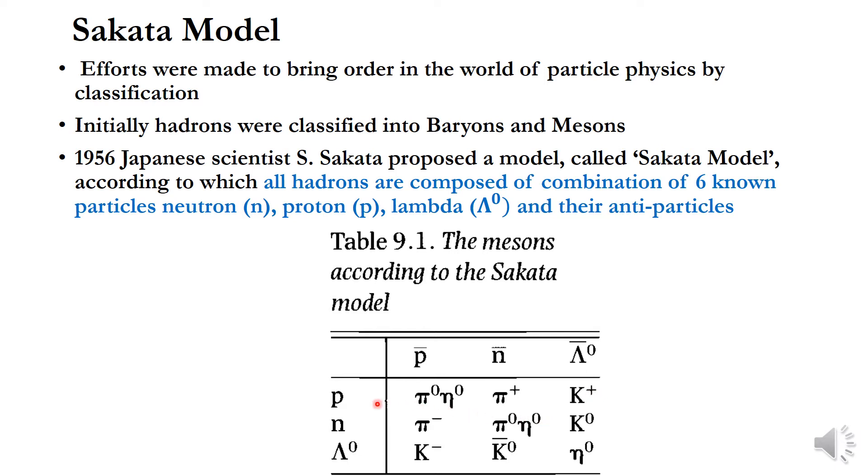Among this you can see this pi zero can be produced by P, P bar, N, N bar. Hence pi zero is really a combination of P, P bar and N, N bar according to Sakata model.